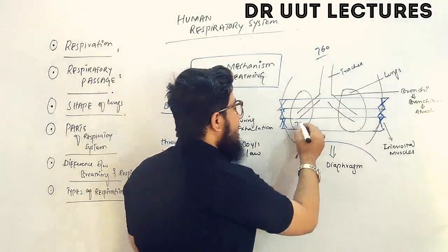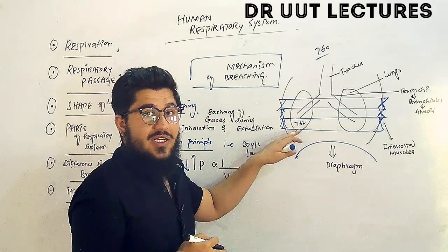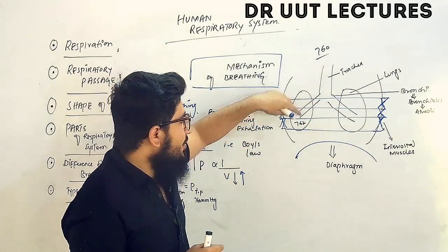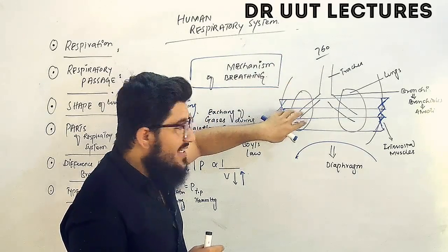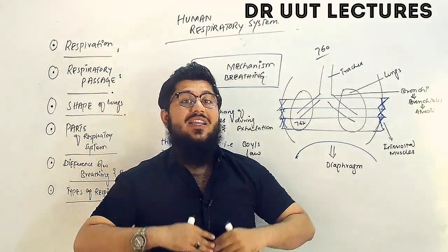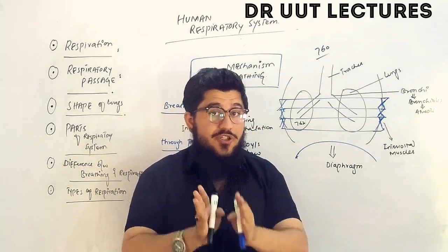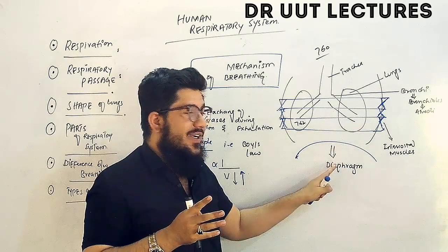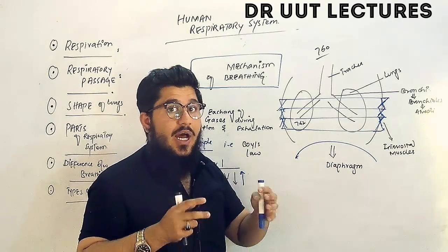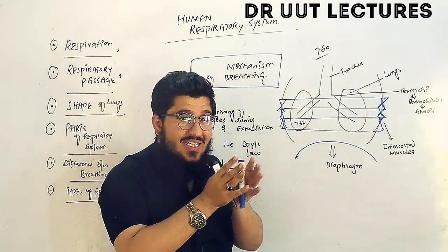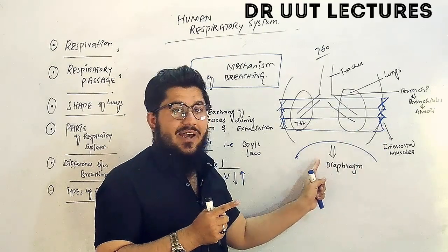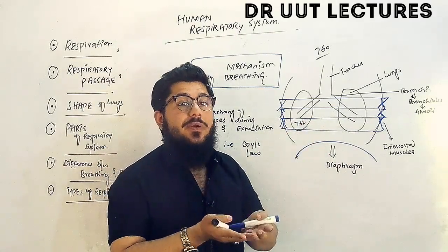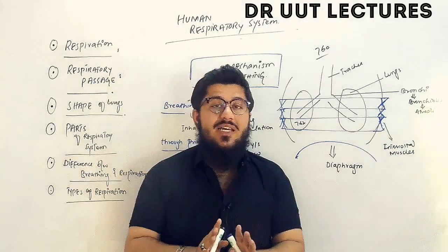The intrapleural pressure shifts from 758 to 762 mmHg. Now inside the lungs the intrapleural pressure is 762 mmHg while outside it is 760 mmHg. Since the pressure inside is higher than atmospheric pressure, the gases inside the lungs move outward. During exhalation, carbon dioxide is exhaled out. This is the logic: during inhalation, the intercostal muscles and diaphragm contract, increasing lung volume and decreasing pressure; during exhalation, they relax, decreasing volume and increasing pressure.